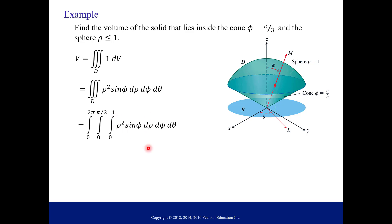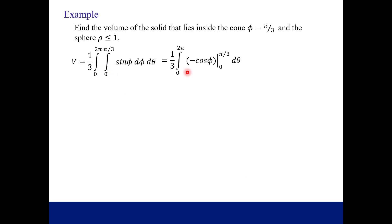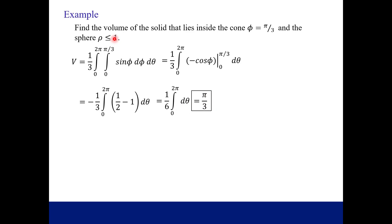With our limits set, we start integrating. First with respect to rho, using the power rule, and evaluate from 0 to 1 — we pull out 1/3 and move to the middle integral. Next we integrate sin φ with respect to phi, giving negative cos φ, and evaluate from 0 to π/3. Plugging in π/3 gives 1/2, and plugging in 0 gives 1; factoring out the negative sign and simplifying gives 1/6. Finally, integrating with respect to theta from 0 to 2π, the final answer is π/3 — that's the volume of the solid between the cone and the sphere.